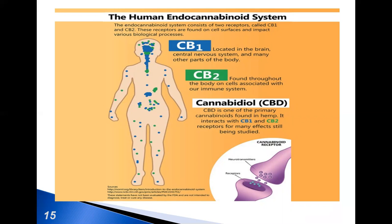Tetrahydrocannabinol appears to alter mood and cognition through its agonist action at the CB1 receptor, which inhibits a secondary messenger system, adenylyl cyclase, in a dose-dependent manner. Via CB1 receptor activation, tetrahydrocannabinol indirectly increases dopamine release and produces psychotropic effects. It also acts as an allosteric modulator of the opioid receptors and potentiates the effect of the glycine receptors.